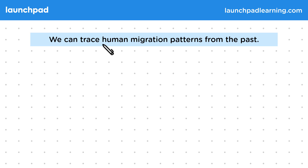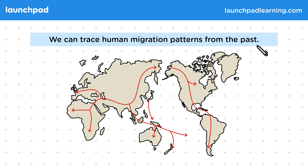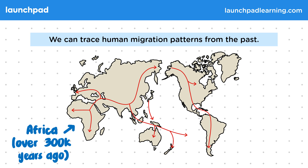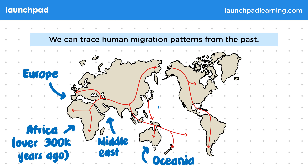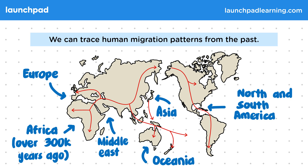We can trace human migration patterns from the past. This image shows a simplified map of the early migration patterns of the human species. Humans came from the African continent over 300,000 years ago. They then moved to the Middle East, to Oceania, Europe and Asia, and finally made the move to North and South America around 12 to 20,000 years ago.